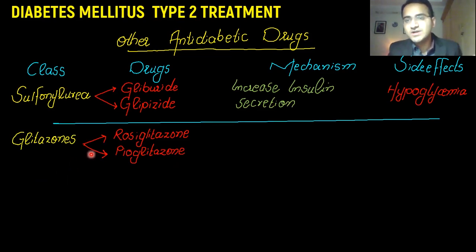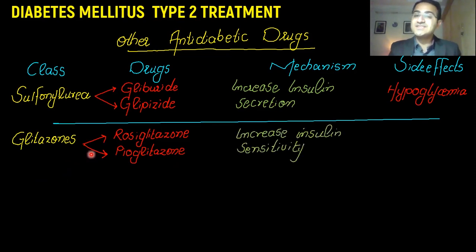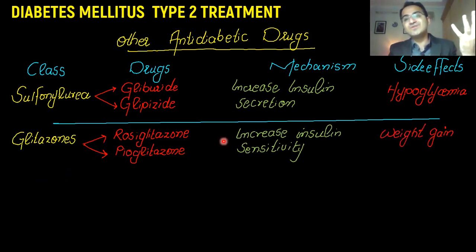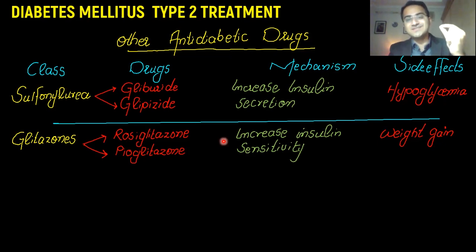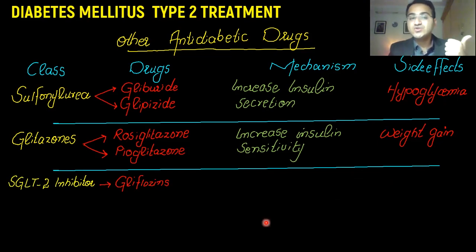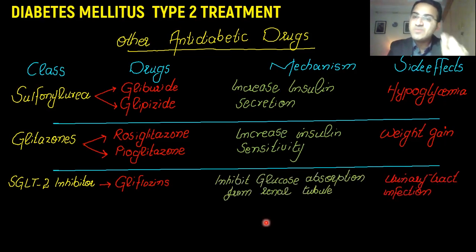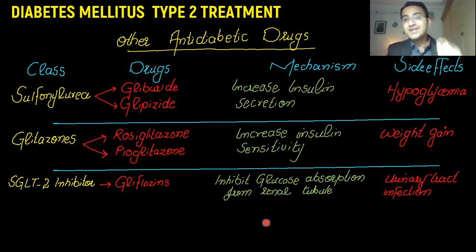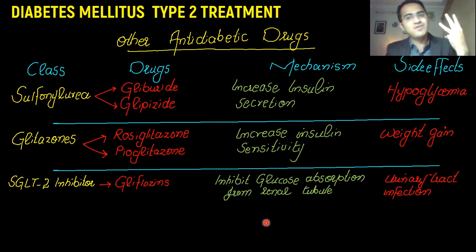You can also use glitazones, which include rosiglitazone and pioglitazone. Their mechanism of action is to increase insulin sensitivity in peripheral tissues; however, because insulin causes fat synthesis, this leads to weight gain. Another class is SGLT2 inhibitors, which act on the kidneys and inhibit glucose absorption from the renal tubules, so excess glucose is lost in urine. However, the high glucose in urine allows bacteria in the urinary tract to proliferate, causing urinary tract infections.